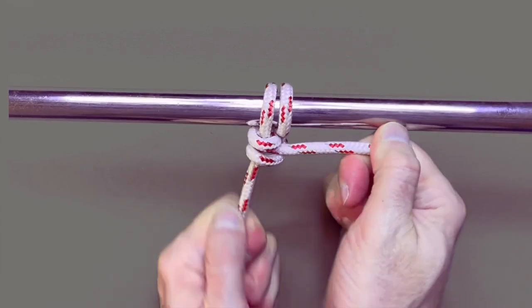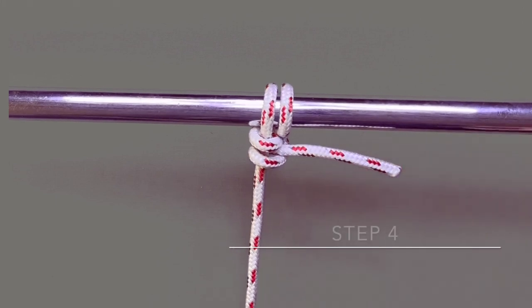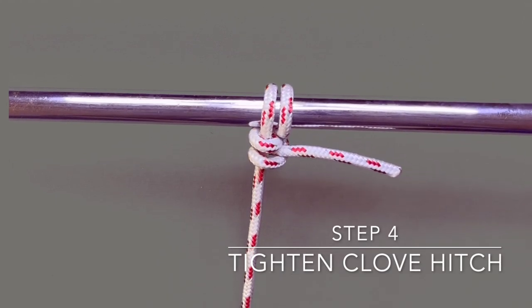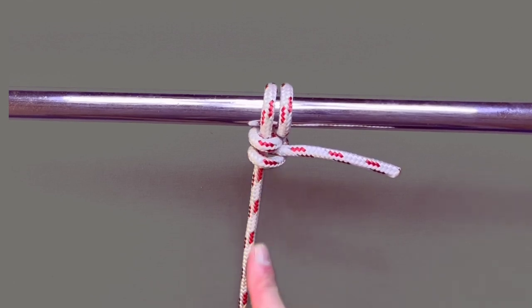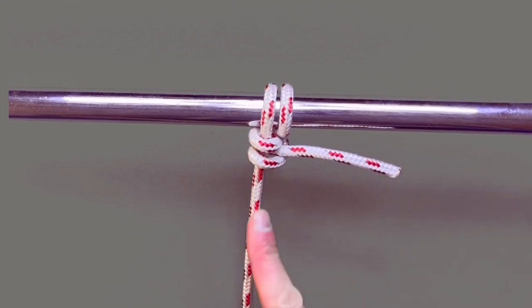Finish the knot by pulling tight. As you do this, you'll notice that you actually have a clove hitch around the standing end at the bottom of the round turn.